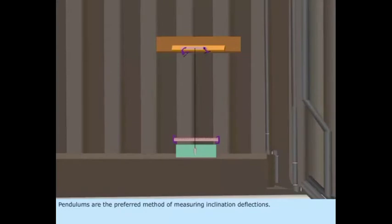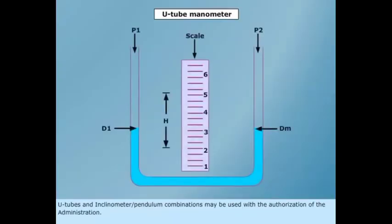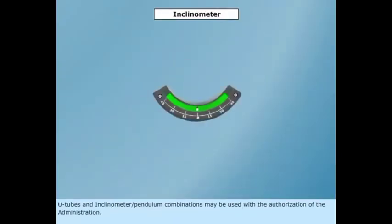Pendulums are the preferred method of measuring inclination deflections. U-tubes and inclinometer or pendulum combinations may be used with the authorization of the administration.